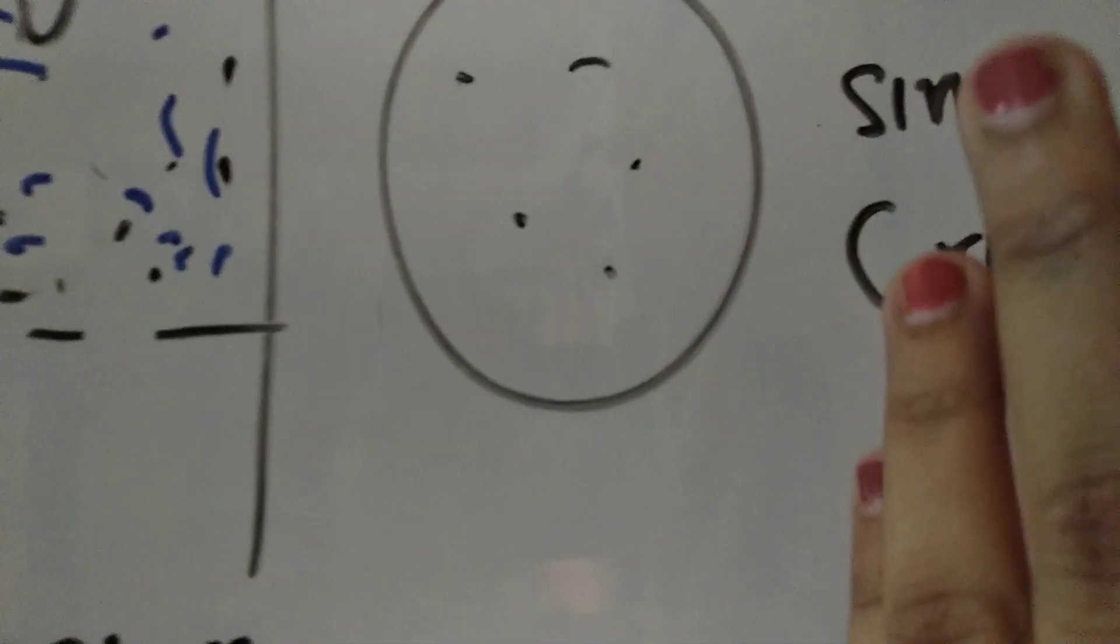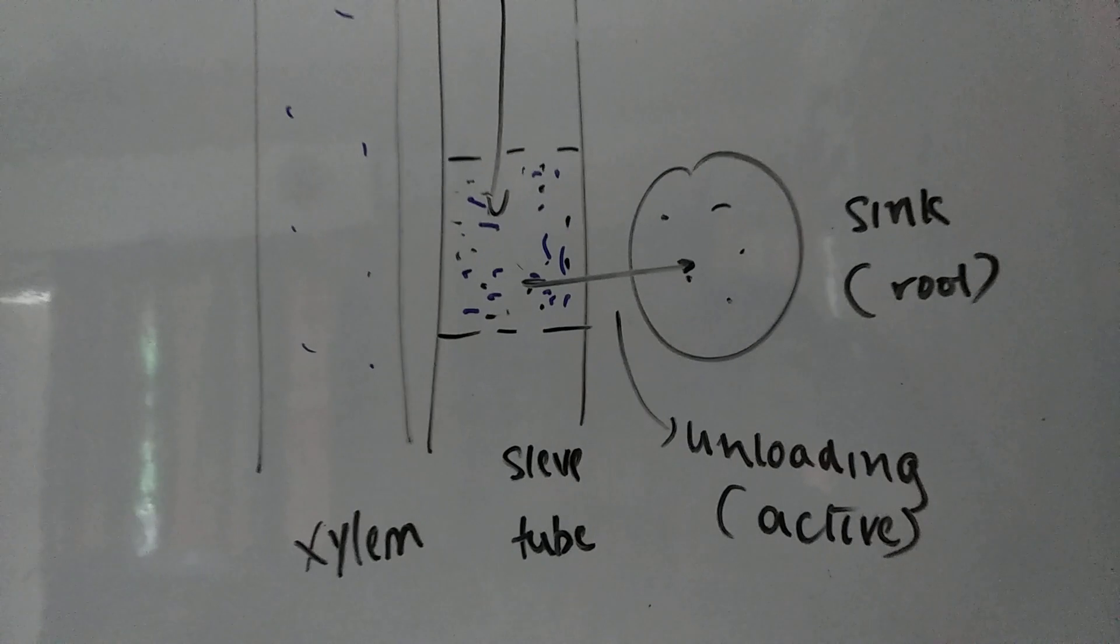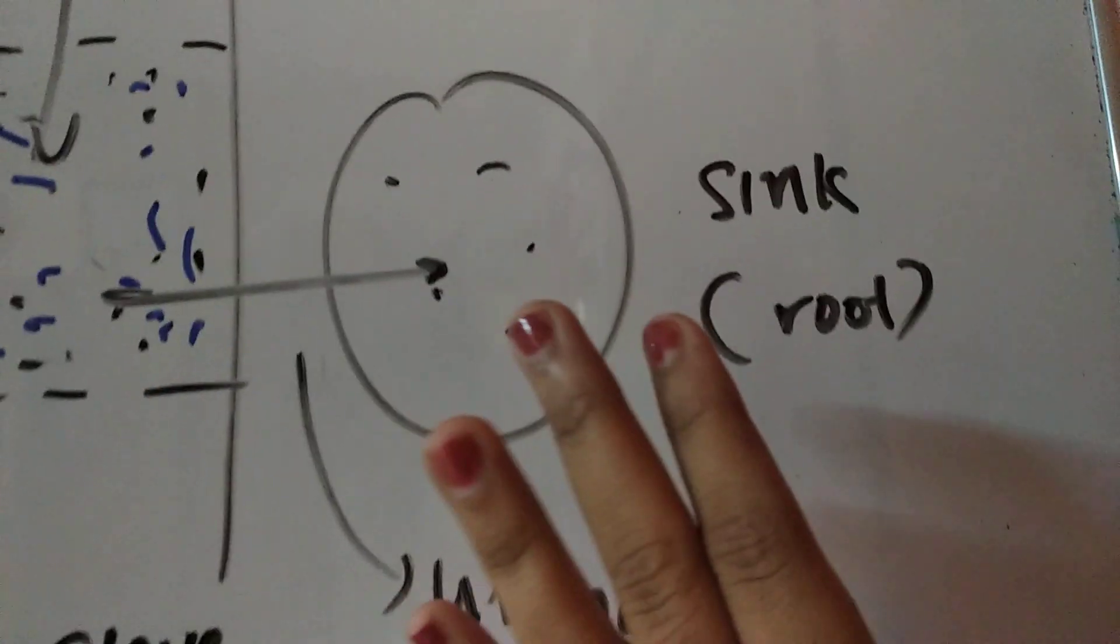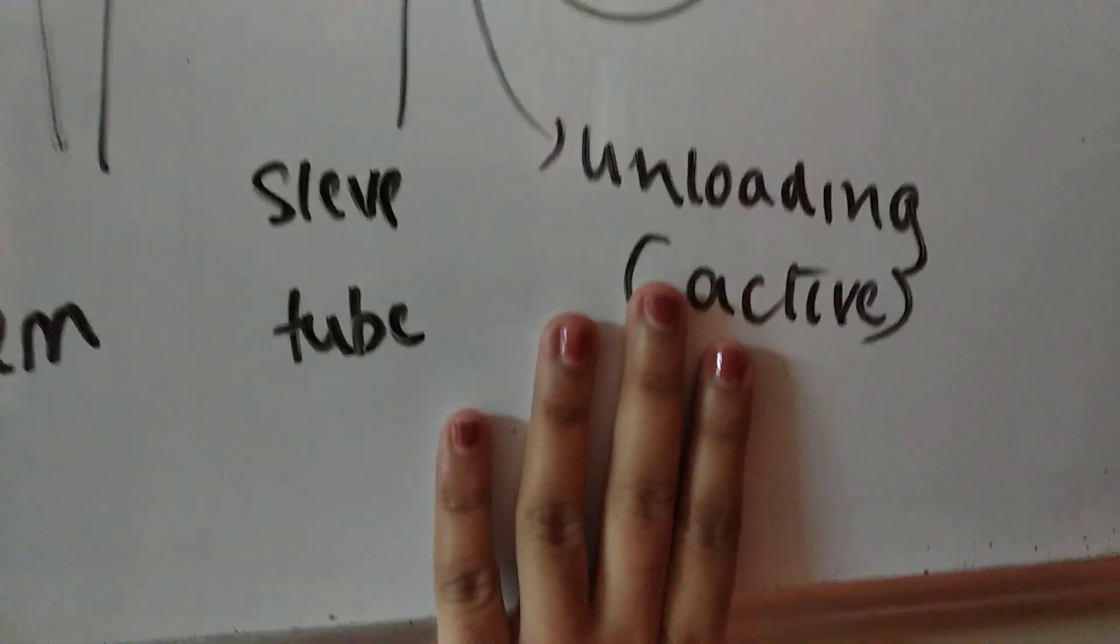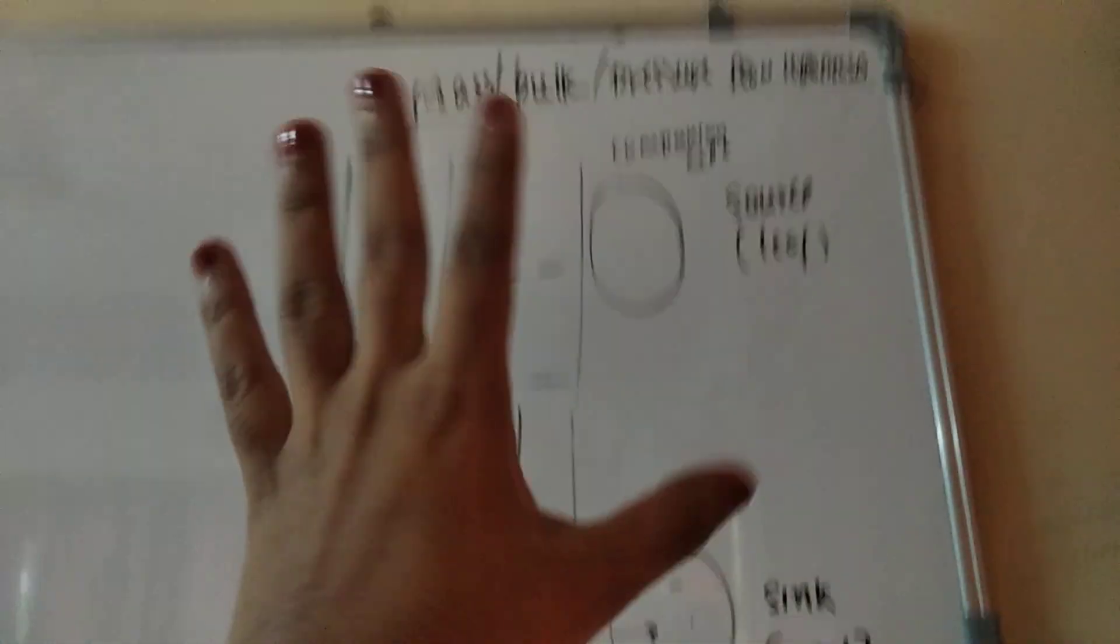That's why now when we have to move the solute from here to here, we have to unload the phloem. We require ATP again. Now our phloem is unloaded. All of the solutes flow from the sieve tube to the companion cell of the root, the sink. This is known as unloading and is also active transport.